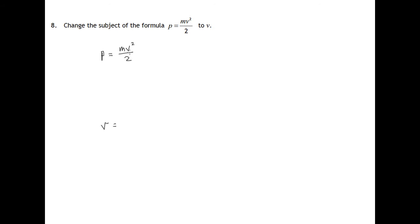First we'll get rid of this divide by 2. The opposite of dividing by 2 would be multiplying both sides by 2. So there's the instructions, what we're doing to both sides. P times 2, 2P.